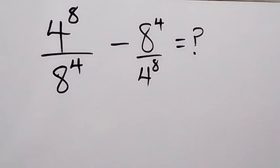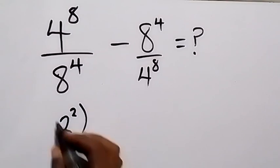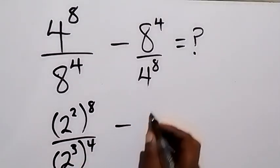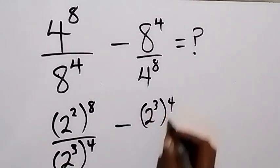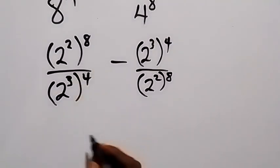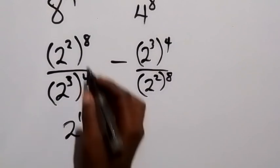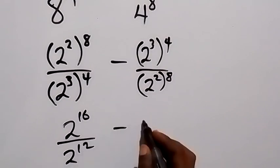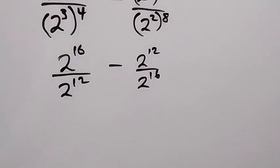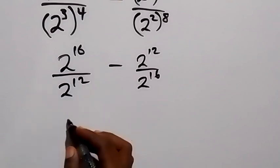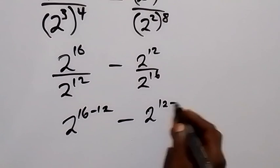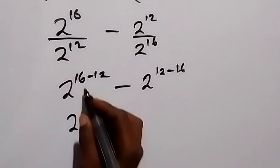We can also do it another way: change everything to base 2 first. This will be 2 raised to power 2, then raised to power 8, over 8 written as 2 raised to power 3, then raised to power 4. Then minus: 8 that's 2 raised to power 3, then raised to power 4, over 2 raised to power 2, then raised to power 8. In the next step we apply the power law: same base divides, we subtract the power. This gives 2 raised to power 16 minus 12.